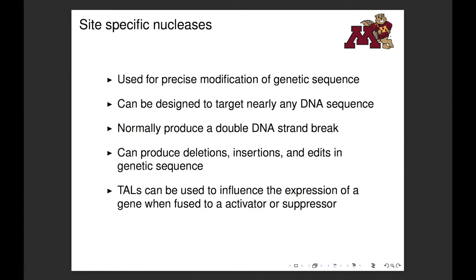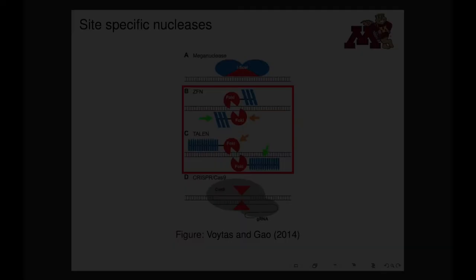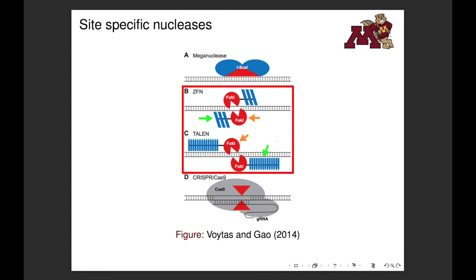site-specific nucleases can be used to produce precise insertions, deletions, and substitutions in genetic sequences. Here is a diagram of several site-specific nucleases. TALENs are very similar to zinc finger nucleases. The site-specificity in both of these systems is determined by a customizable, sequence-specific DNA binding domain, which is indicated here with green arrows.